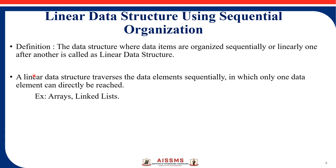The definition of a linear data structure: a data structure where data items are organized sequentially or linearly, one after another, is called a linear data structure. The data or records are organized linearly in a sequential or ordered manner. A linear data structure traverses data elements sequentially, in which only one data element can be directly reached at a time. Examples include arrays and linked lists, as discussed in the introduction to data structures and algorithms.